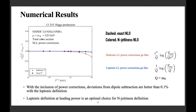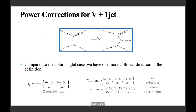Now moving to the one-jet case: V plus one jet. Adding a jet changes the N-jettiness definition — tau_1 becomes more involved. In the zero-jet case you look at the minimum of two scalar products; in the one-jet case, there is a new hard direction — the jet — so you now have the sum of two minima, one for each of the two radiations p_3 and p_4, each minimized over all three hard directions, giving nine possibilities as opposed to two.